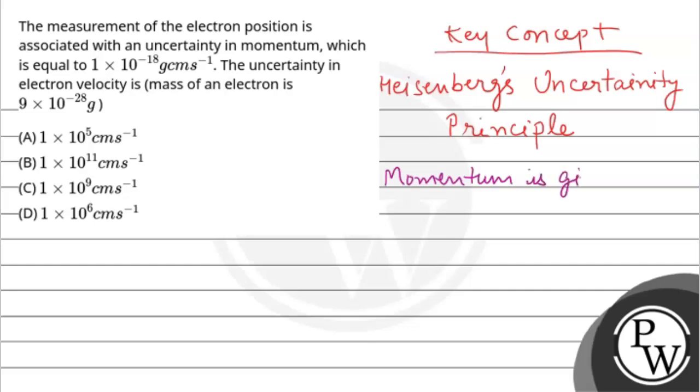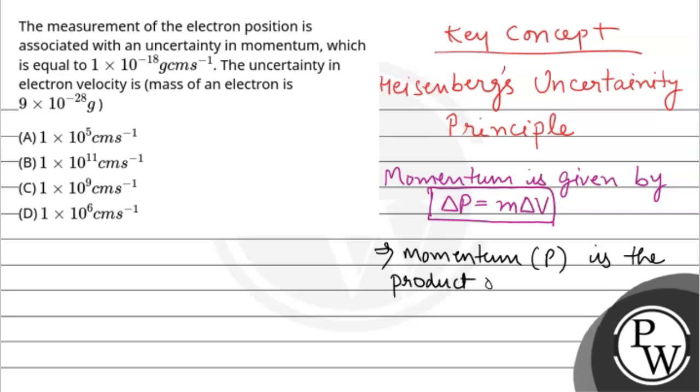Momentum is given by ΔP = mΔV. This is the expression which relates momentum and velocity. So momentum (P) is the product of mass (m) and velocity (V).